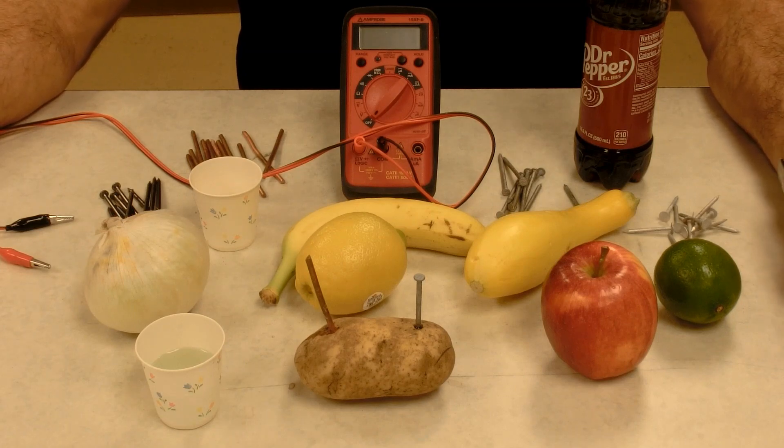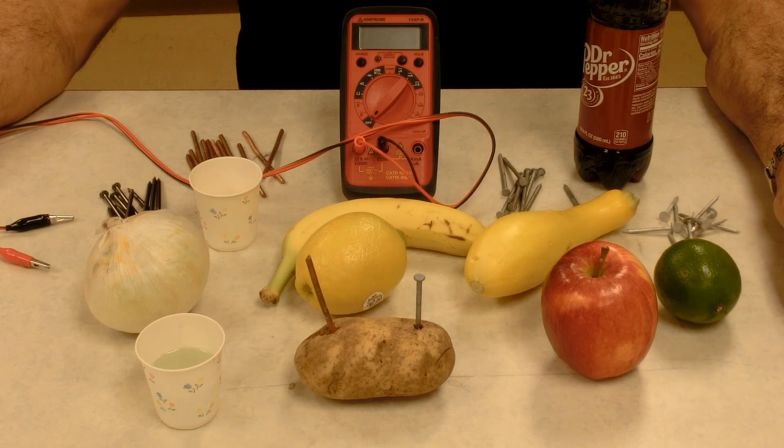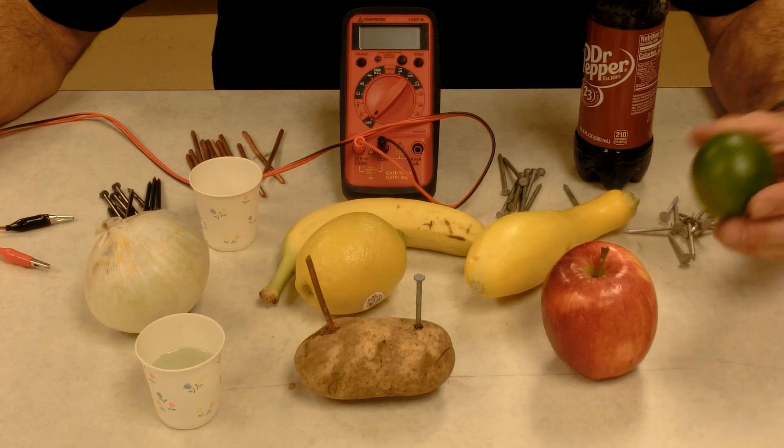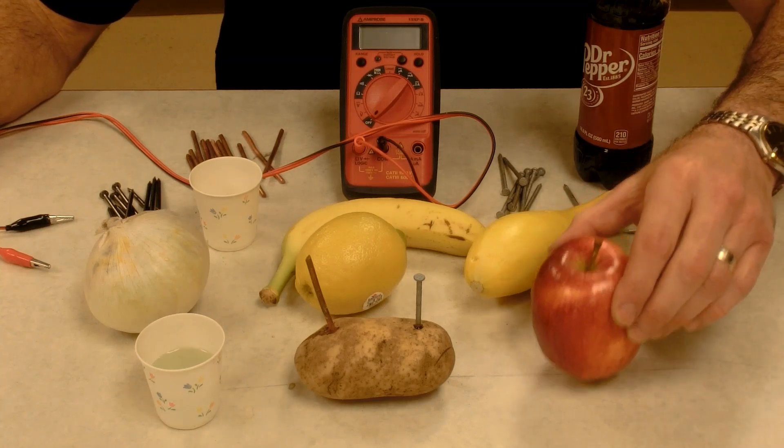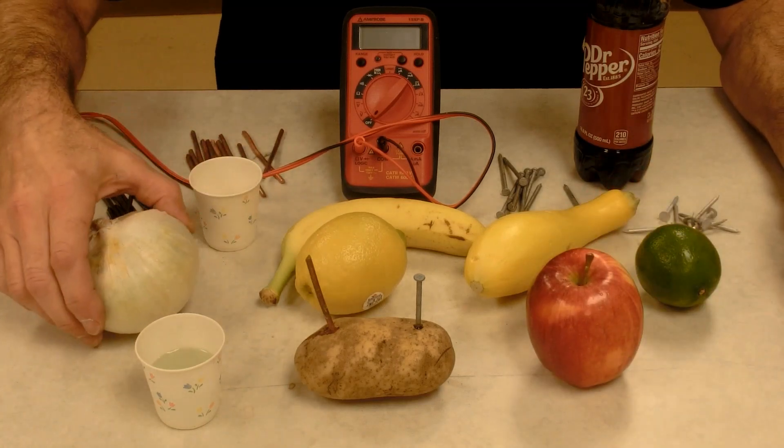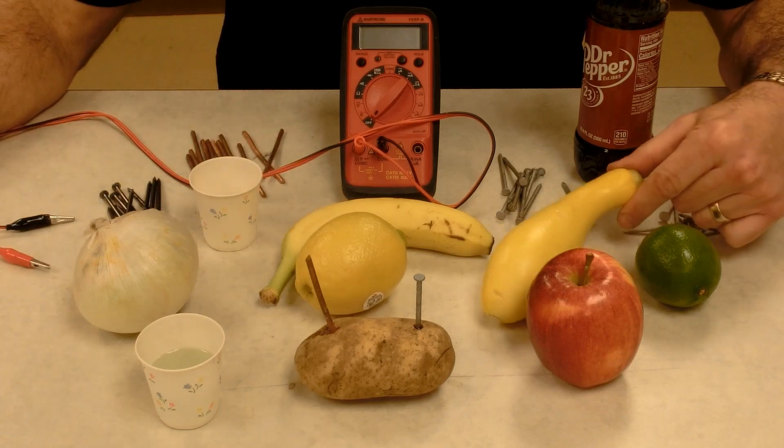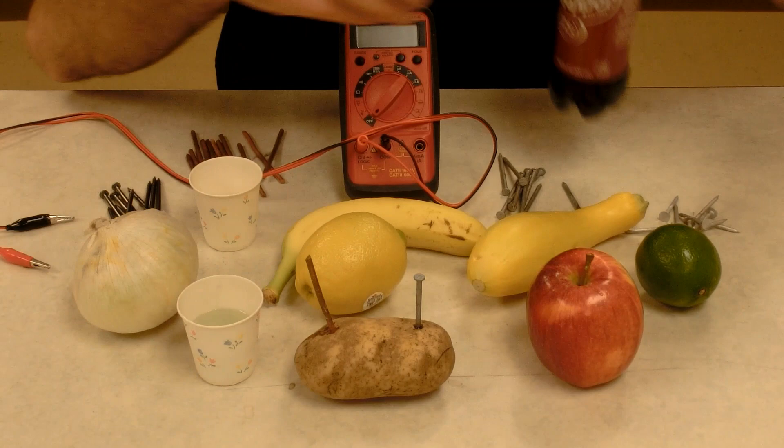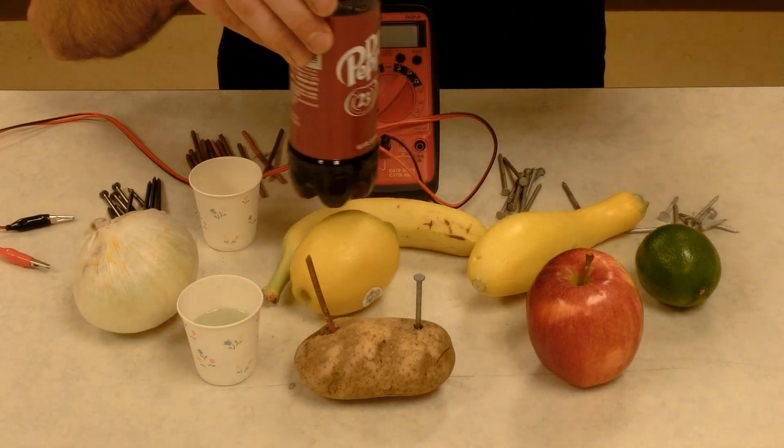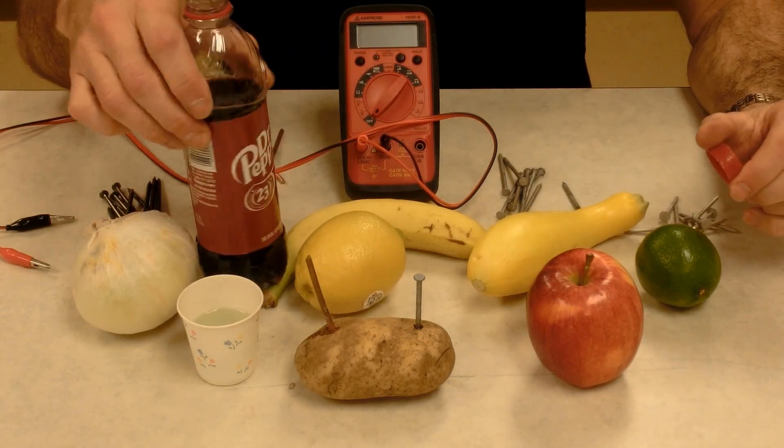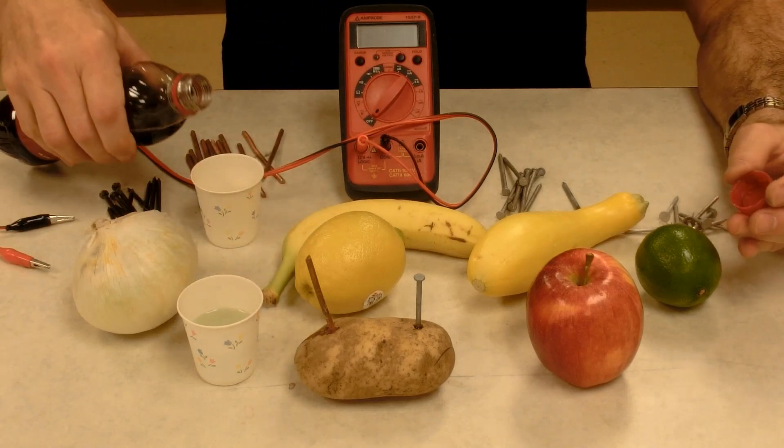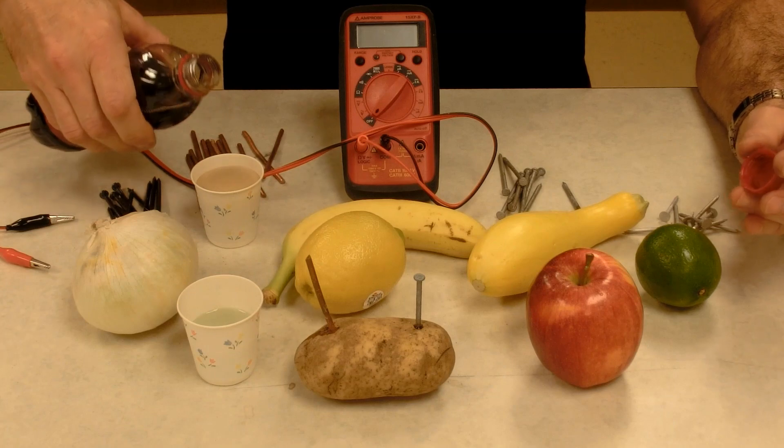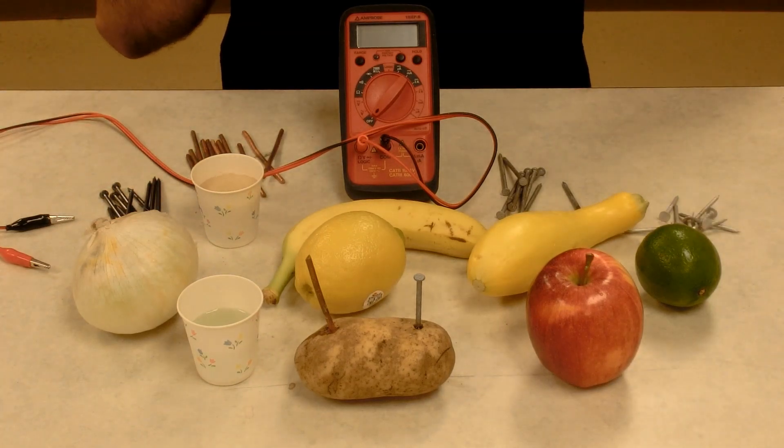We test combinations of metals in different electrolytes. For the electrolytes, I've got to test a lime, I've got an apple, potato, an onion, a lemon, a yellow squash, a banana. We've got salt water, and we've also got Dr. Pepper, the nectar of the gods. So we'll test those different materials as electrolytes to see how they work.